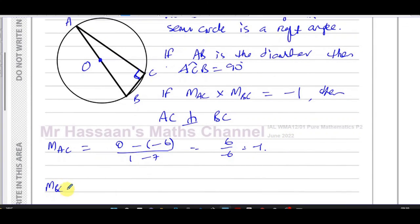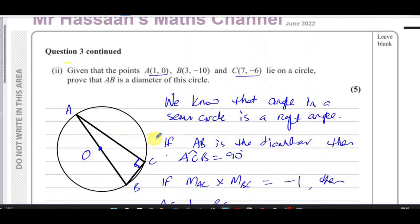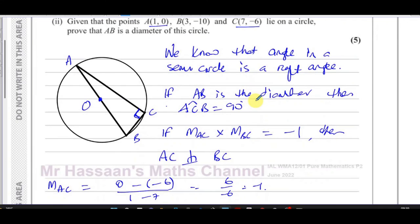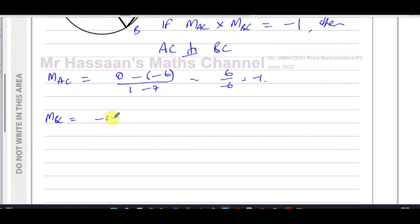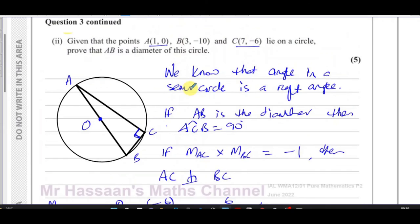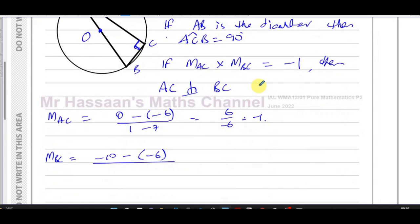And for the gradient of BC, B is (3, -10) and C is (7, -6), so we have -10 minus -6 over 3 minus 7. That's -10 plus 6 over -4, which is -4 over -4, which gives 1. So the gradients are negative reciprocals of each other.